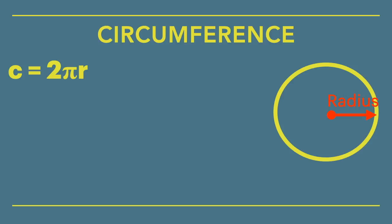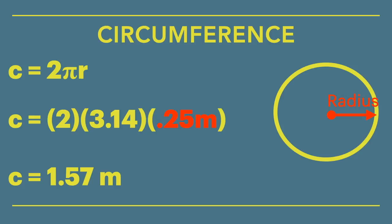Next, we'll enter our numbers. Our circumference is 2 times 3.14 times our radius, which is, as we just discovered, 0.25 meters. If you multiply all of that together, you'll find our sampling tool's circumference is 1.57 meters.